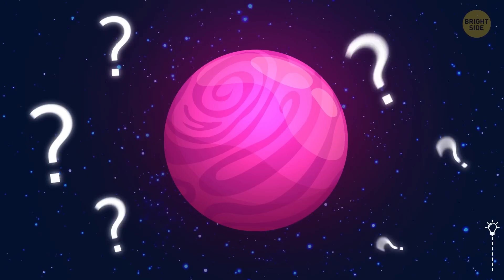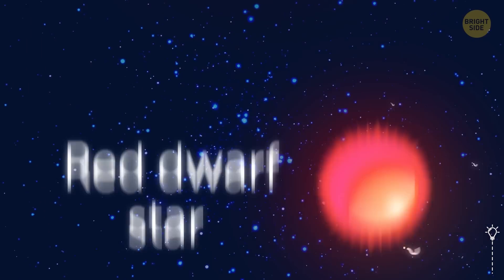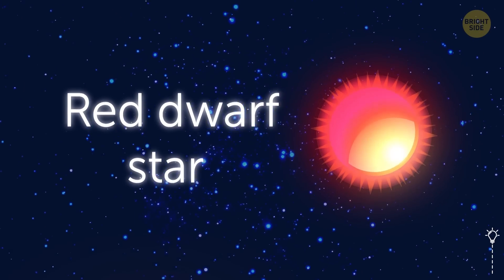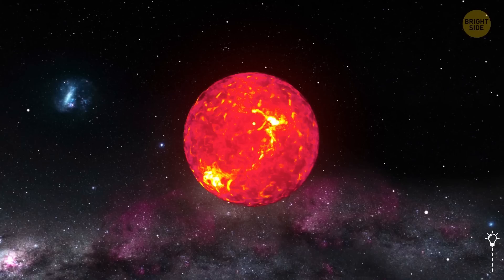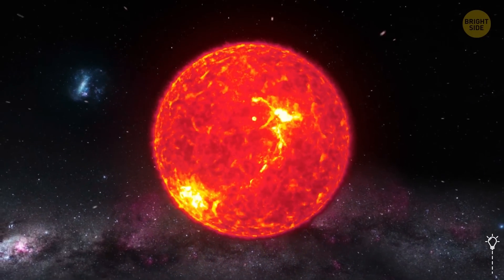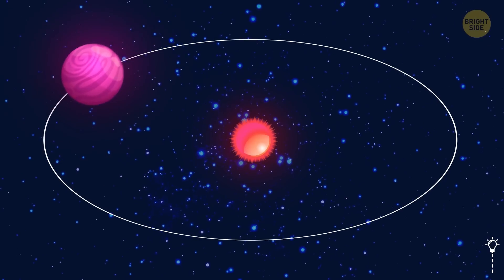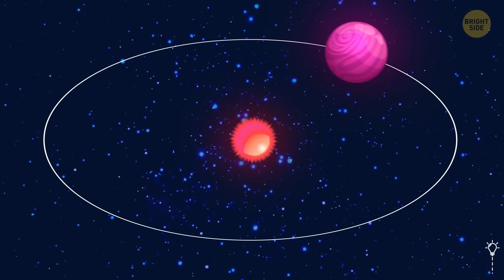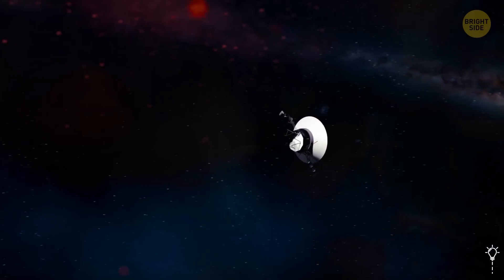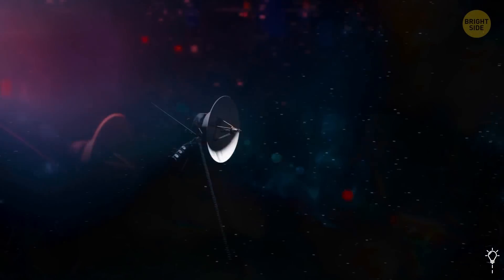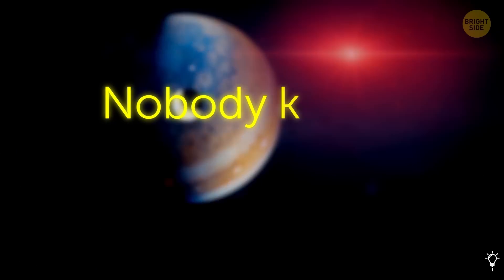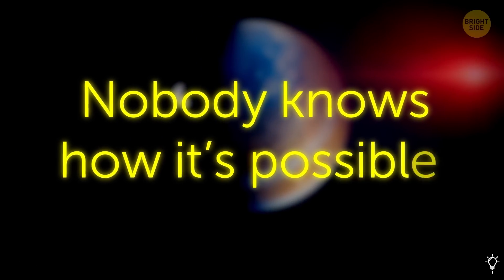But the strange thing about this planet is that it orbits a red dwarf star that's only half the size of our Sun. This has never been seen before, and in theory, such huge planets shouldn't orbit stars so small. There probably won't be a sensible explanation for this until other similar planets are found. But for now, nobody knows how it's possible.